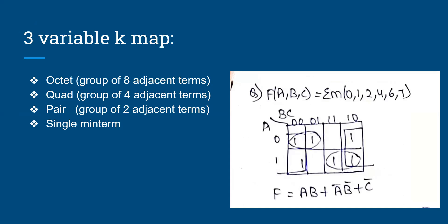What is octet? It is a group of eight adjacent terms. What is a quad? It is a group of four adjacent terms. What is a pair? It is a group of two adjacent terms. So by example we can easily understand the three variable K-map minimization.